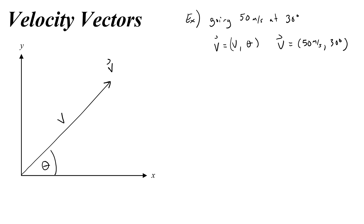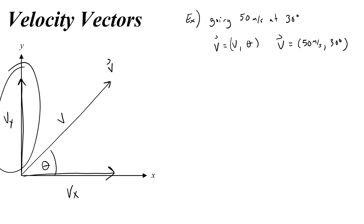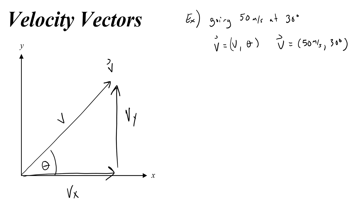Now all vectors have components, and in this case we're going to have an x component of velocity and a y component of velocity, so we'll call the x component vx and the y component vy. Remember these are kind of like the coordinates if we were graphing this. Now it is more often that we decide to take the vy and draw it here, so that we get a right triangle.